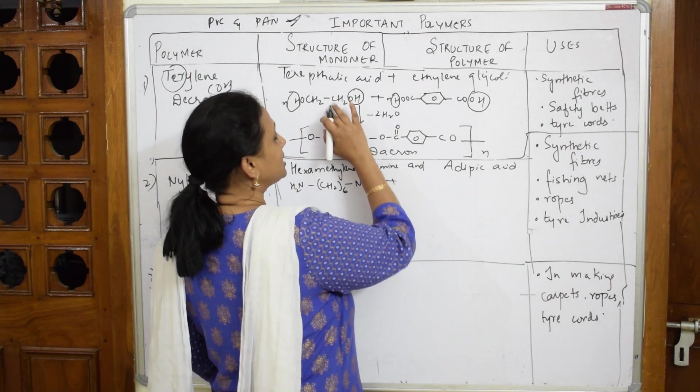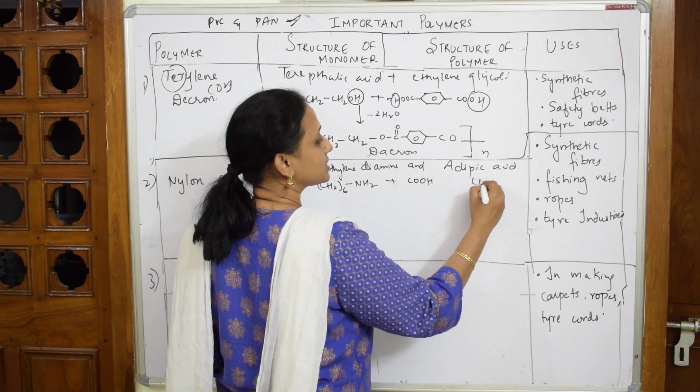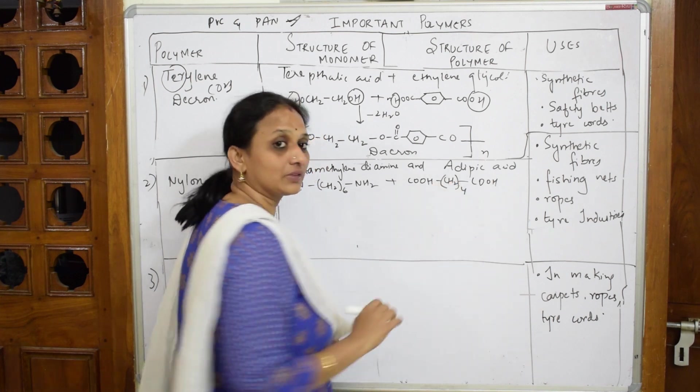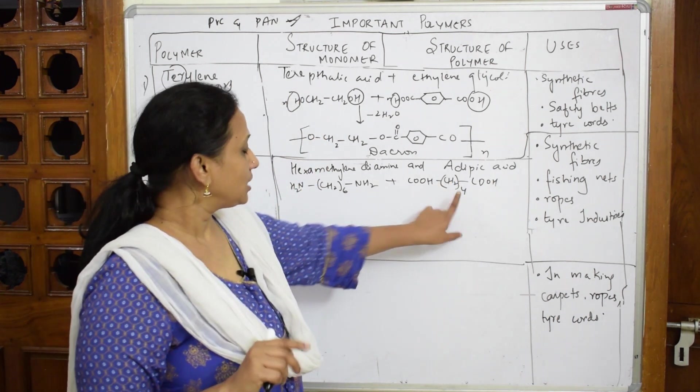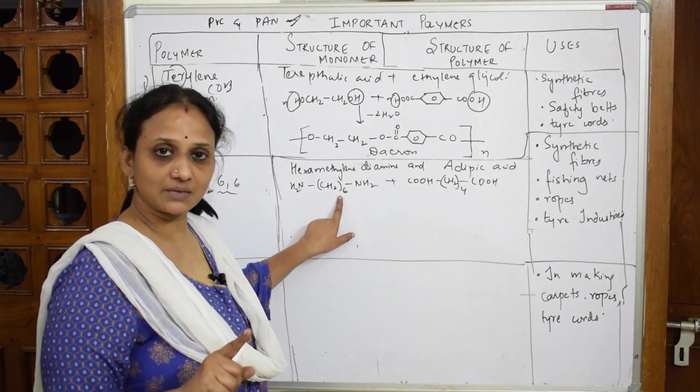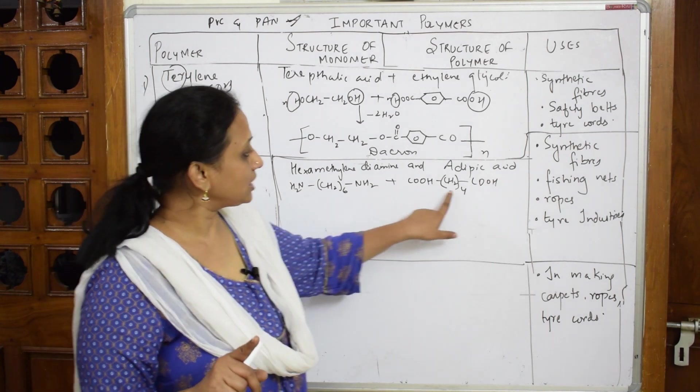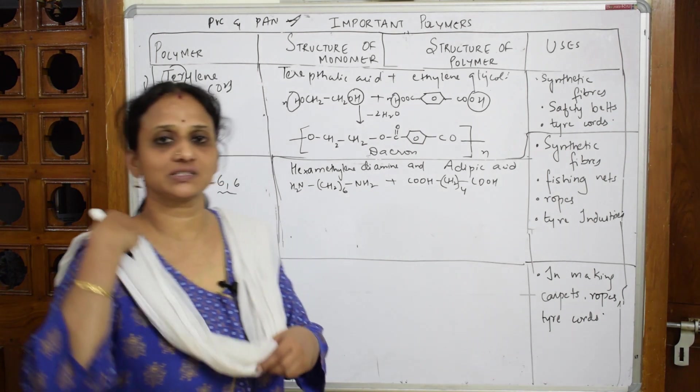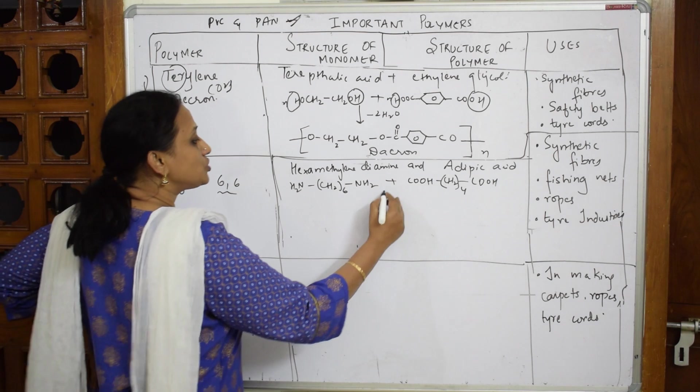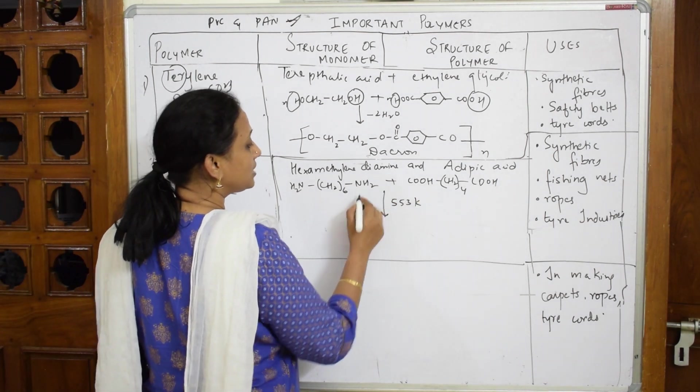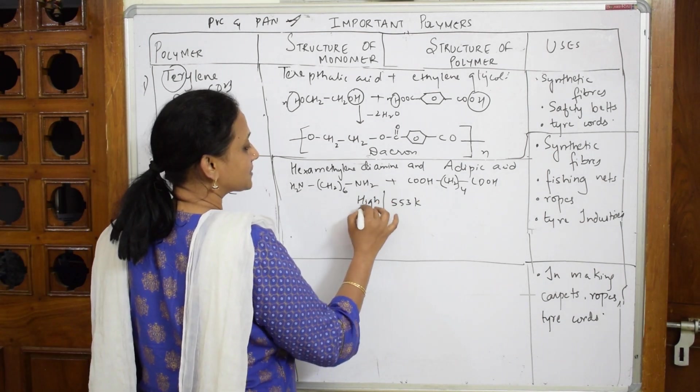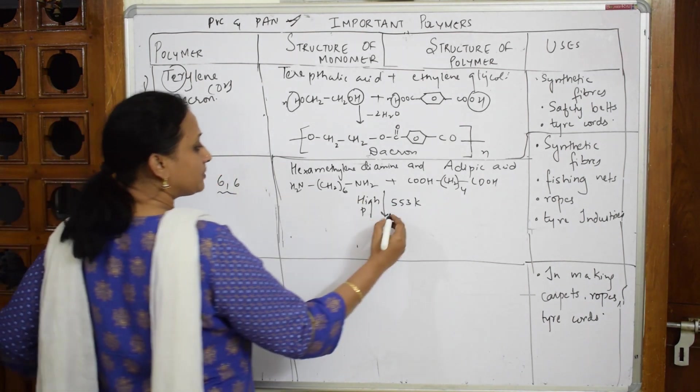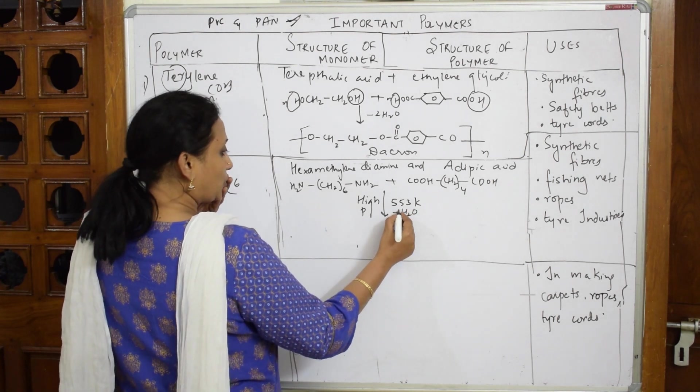You're going to add with adipic acid. Adipic acid is simple, just like your terephthalic acid. You have COOH groups on both the sides, but in the center you have four CH2 groups. So here are six carbon atoms (methylene groups), and here also there are six: four, five and six - total six and six joined together to form Nylon 6,6 polymer. This is under 553 Kelvin, high pressure. How are the water molecules lost? Two water molecules are lost.